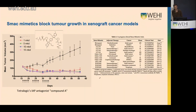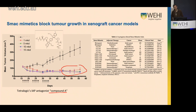A number of SMAC mimetics entered clinical trials. In a xenograft mouse model, one IAP antagonist, Compound A, completely prevented tumor growth at quite low doses. However, many of these subsequently failed clinical trials, because the SMAC mimetics have to penetrate into the tumor — which can be difficult — and there was no stratification of tumor responsiveness to TNF. For these to have the best chance of working, you have to target tumors that will respond to TNF-induced cell death.